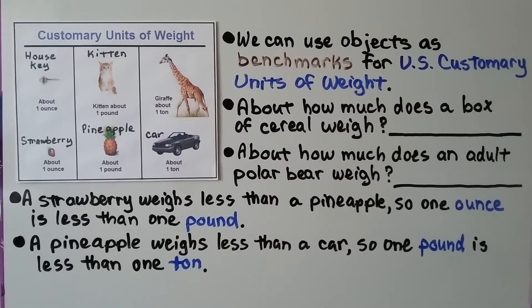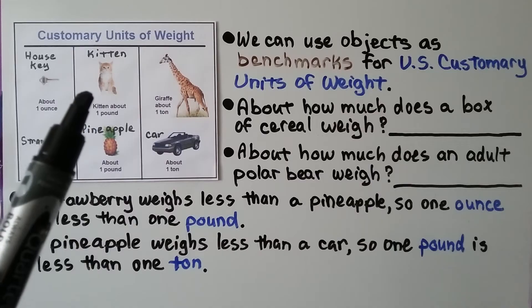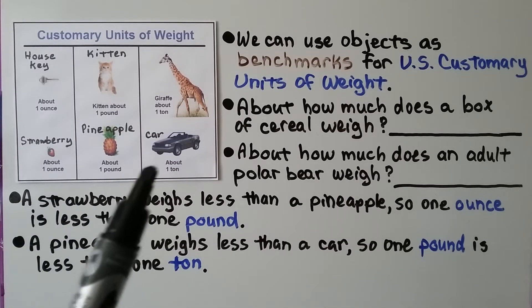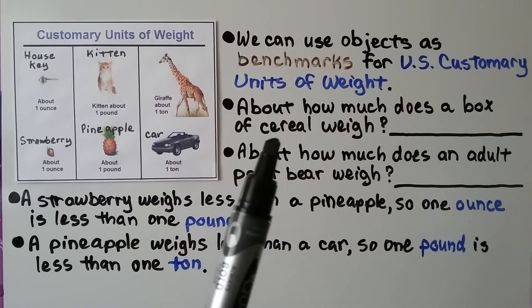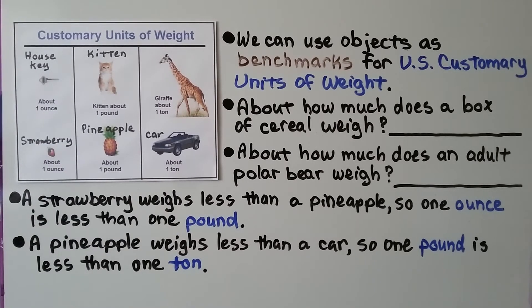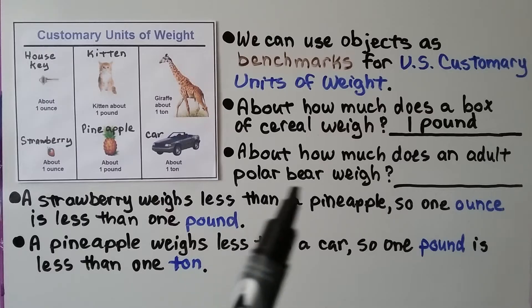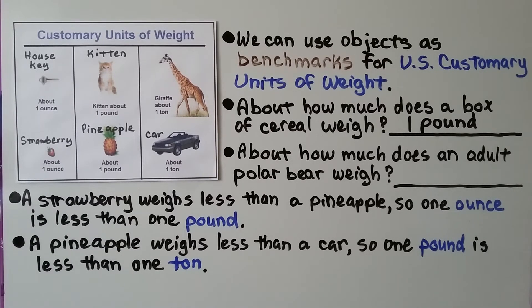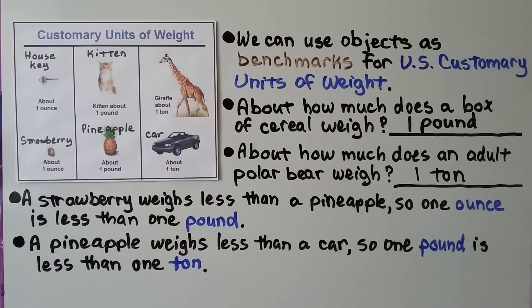We can use objects as benchmarks for U.S. customary units of weight. A house key is about an ounce, a baby kitten is about a pound, and a giraffe is about a ton. Similarly, a strawberry is about an ounce, a pineapple is about a pound, and a car is about a ton. About how much does a box of cereal weigh — an ounce, a pound, or a ton? If you said one pound, you're right. About how much does an adult polar bear weigh — about as much as a strawberry, a pineapple, or about a car? If you said one ton, you're right — polar bears are very heavy. A strawberry weighs less than a pineapple, so one ounce is less than one pound; and a pineapple weighs less than a car, so one pound is less than one ton.